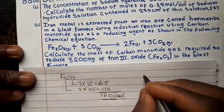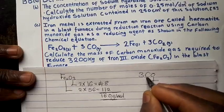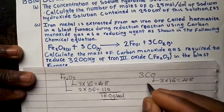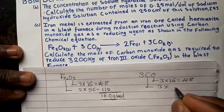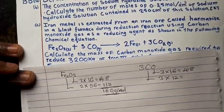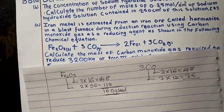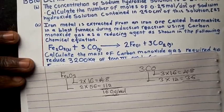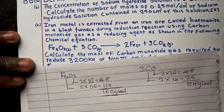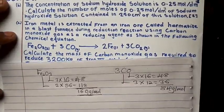Now let me find the molar mass of carbon monoxide using the balanced equation. Three moles of oxygen: 3 × 16 = 48. Three moles of carbon: 3 × 12 = 36. So 48 plus 36 gives 84 grams per mole. That is the molar mass of carbon monoxide.